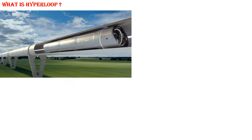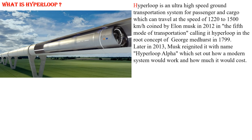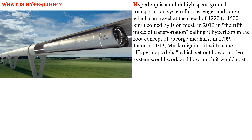What is hyperloop? Hyperloop is an ultra high speed ground transportation system for passengers and cargo which can travel at the speed of 1220 to 1500 kilometers per hour, coined by Elon Musk in 2012 as the fifth mode of transportation, building on the root concept of George Madhurst from 1799.